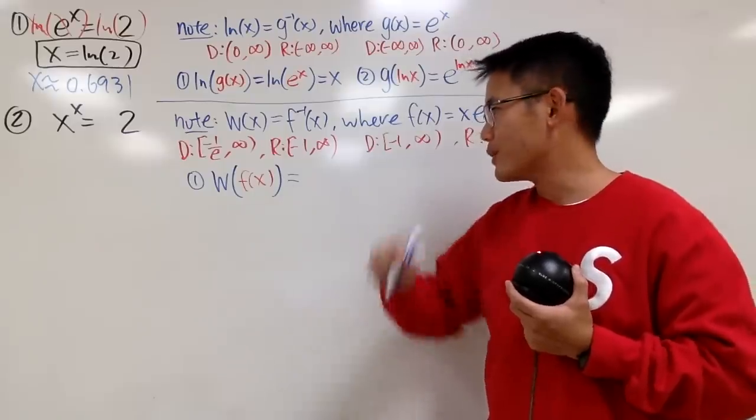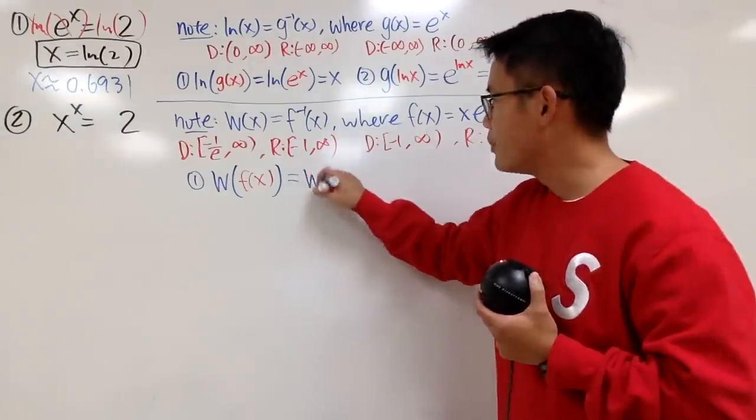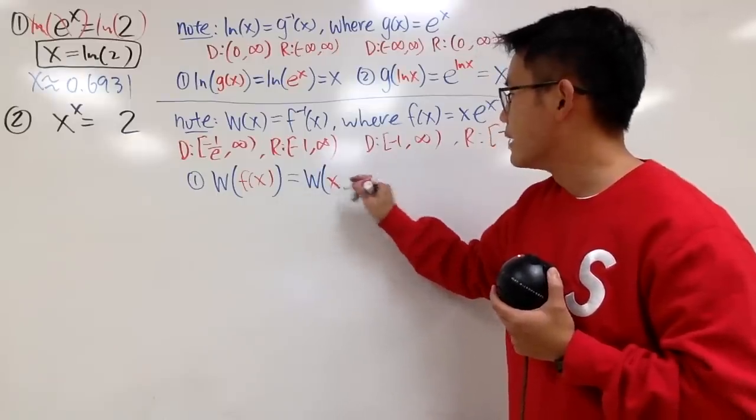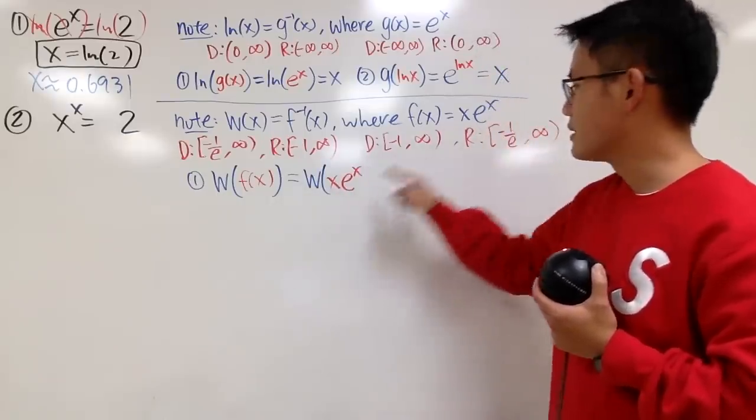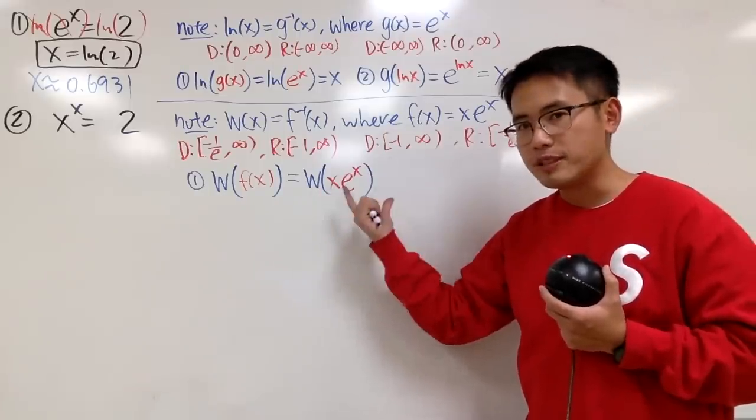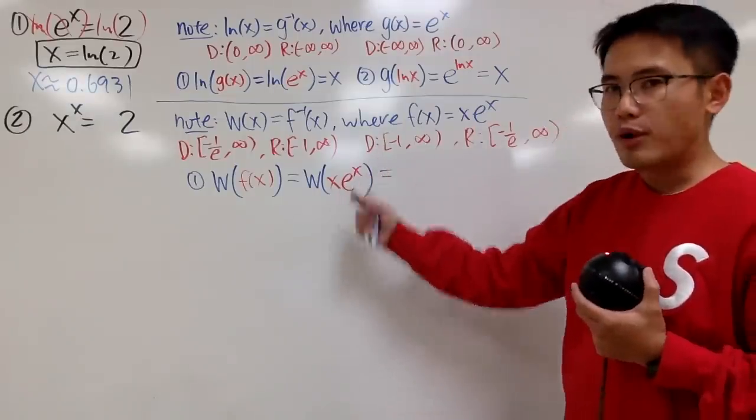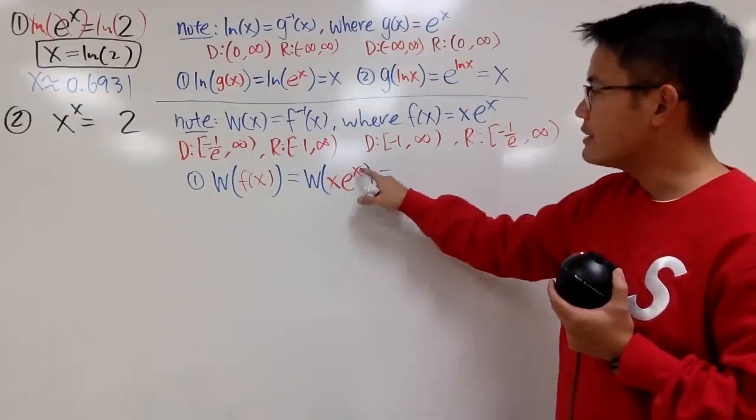Well, what are we talking about for the f? This f is that, so we can write this down as w of x times e to the x, because that's what the f is, right?